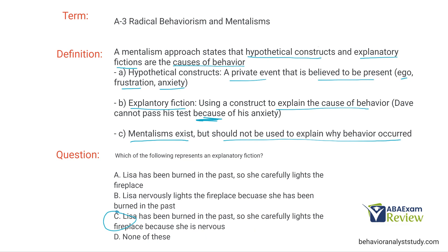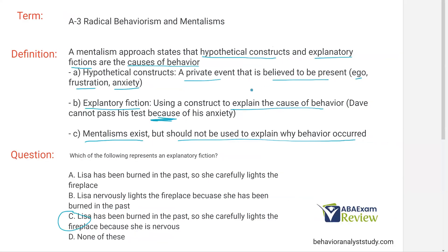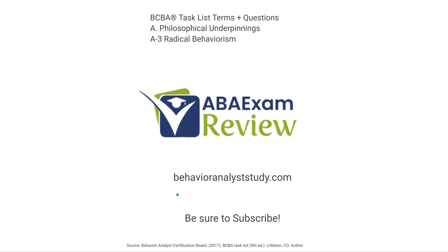Radical behaviorism: we accept that private events are behavior — thoughts and feelings are behavior, but we can't observe or measure them. Mentalisms: these are constructs and explanatory fictions. We acknowledge mentalisms exist; they're just not the cause of behavior. Those are the two key takeaways. Very simple concept on the surface — we just need to remember some basic things when discussing radical behaviorism and mentalisms. Thank you for watching. Check out behavioranalyststudy.com for all of our study materials. Be sure to like and subscribe. Let us know when you pass. Work hard, study hard. See you soon.